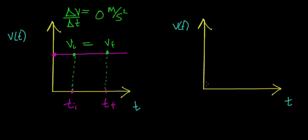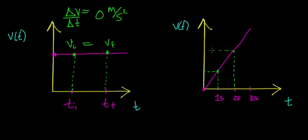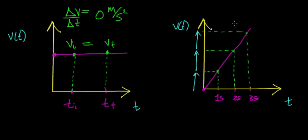For a velocity versus time graph of an accelerating object, there's a nice linear relationship, meaning velocity changes at a constant rate. At one, two, and three seconds, going up from the time axis to the velocity curve and over to the velocity axis, the velocity vectors are equal in length because velocity is increasing at a constant rate — the same rate during each interval of time.